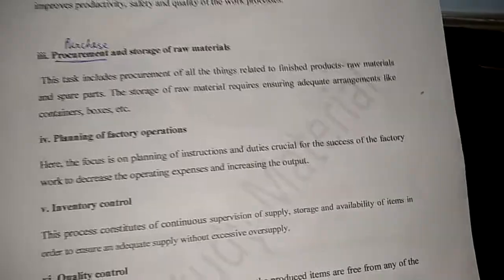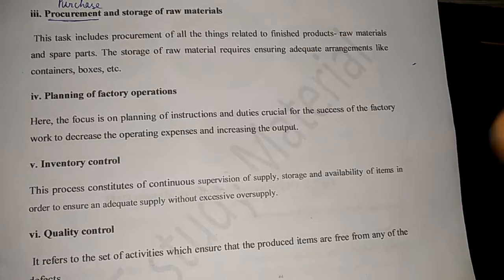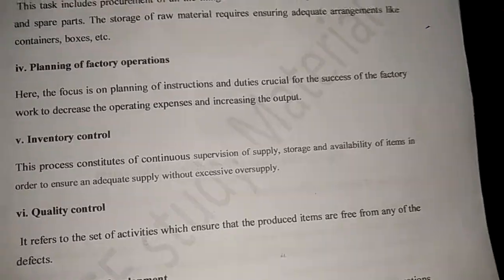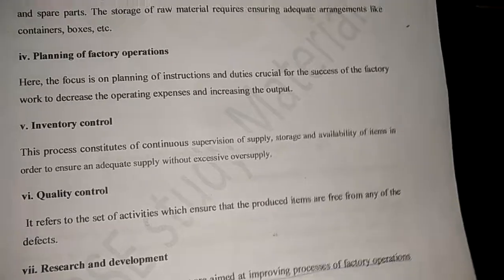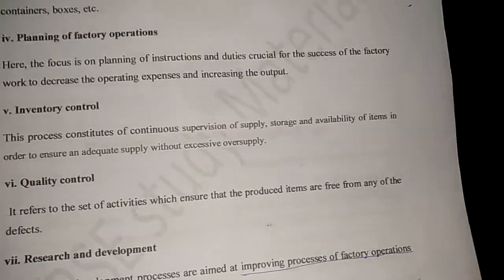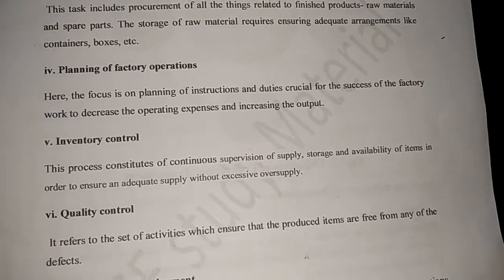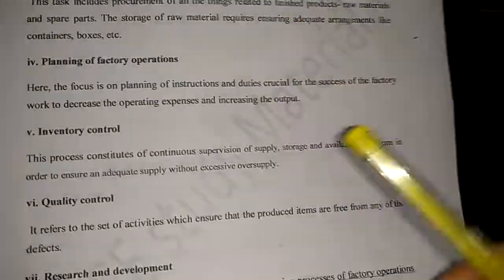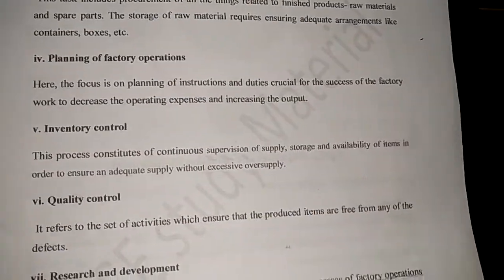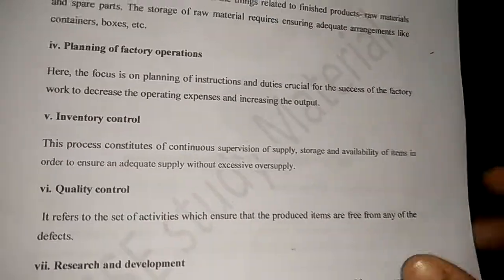Other factors include availability of raw material and availability of labor. Then procurement and storage of raw material, which includes the purchase of raw material and spare parts required for the finished product. Storage of raw material requires arrangements like containers and boxes to store the goods.